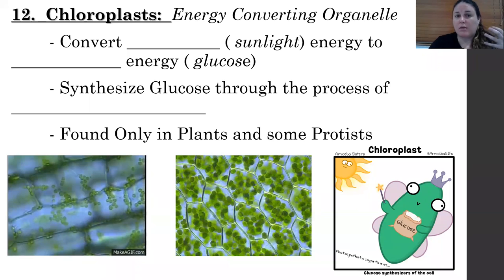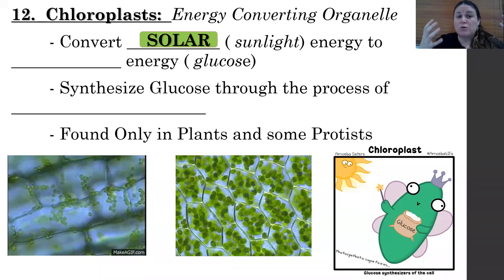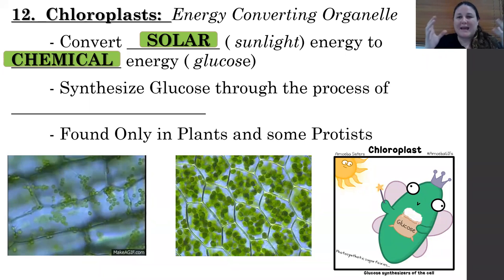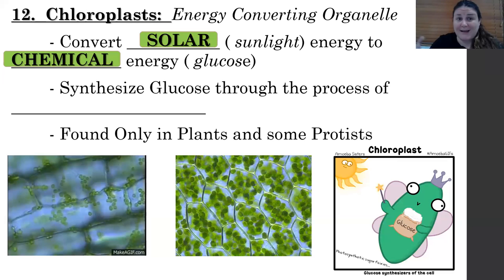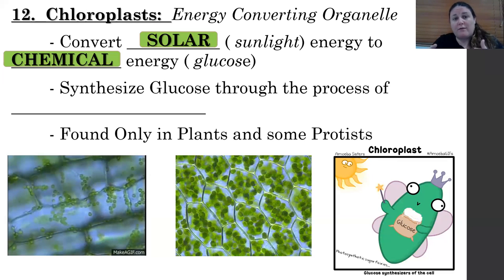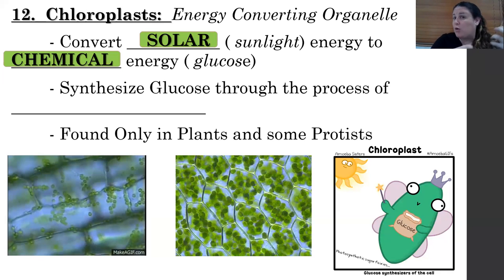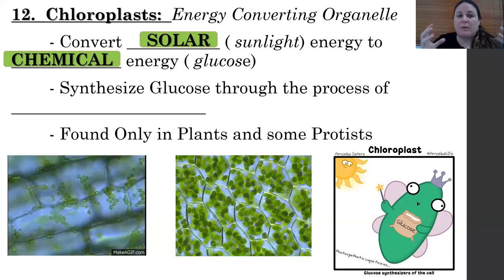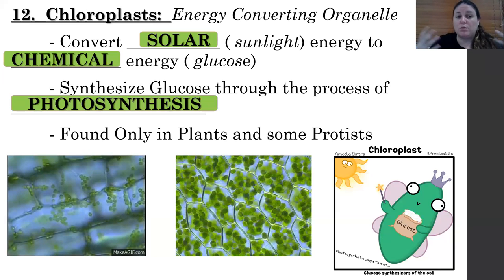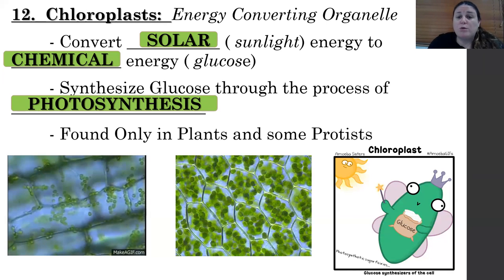The chloroplast is another energy converting organelle. It uses sunlight or solar energy and converts it into chemical energy. Glucose is a chemical, so we're taking sunlight energy and converting it into chemical energy. Sometimes it's described as taking inorganic molecules and using them to make something organic. The process chloroplasts use to synthesize molecules such as glucose is photosynthesis.